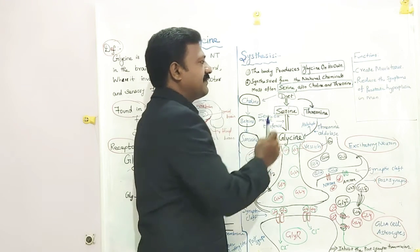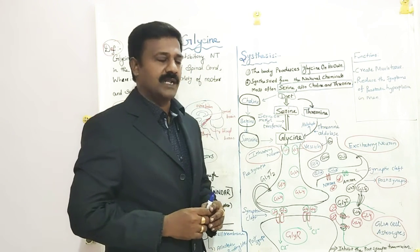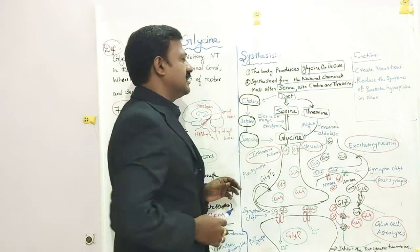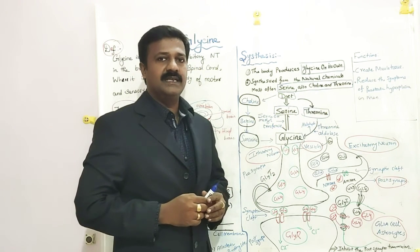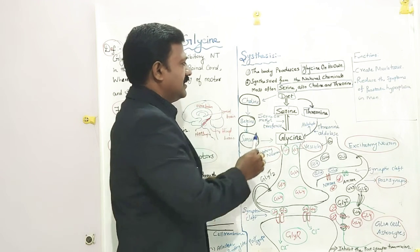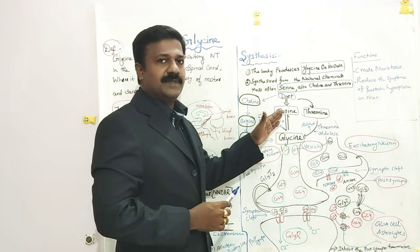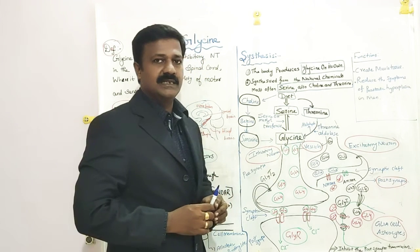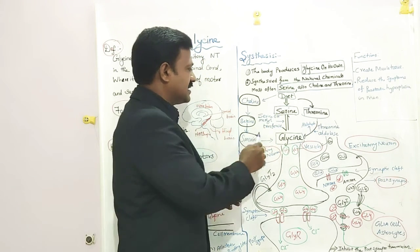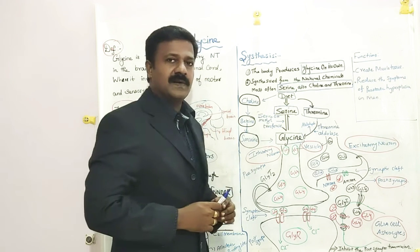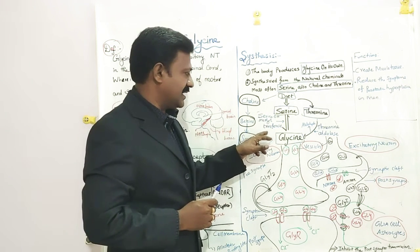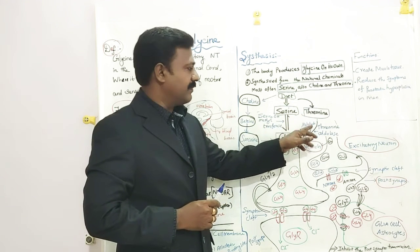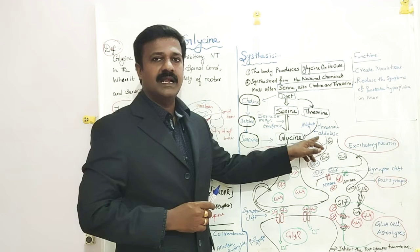And also they are synthesized from Choline and Threonine. The Serine, Choline, and Threonine are obtained from the diet. So from the diet, the Serine is obtained, then it is directly converted into Glycine in the presence of the enzyme Serine hydroxymethyl transferase. Then Threonine is converted into Glycine by the enzyme Threonine aldolase.